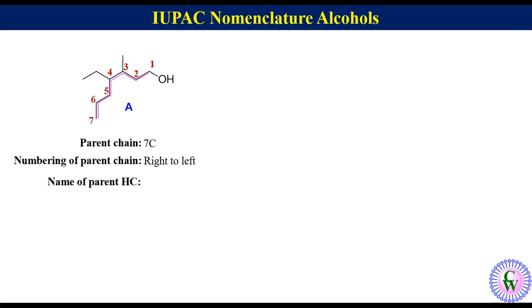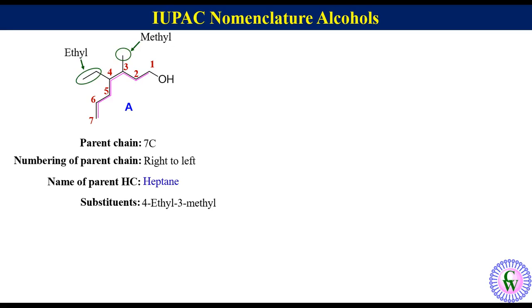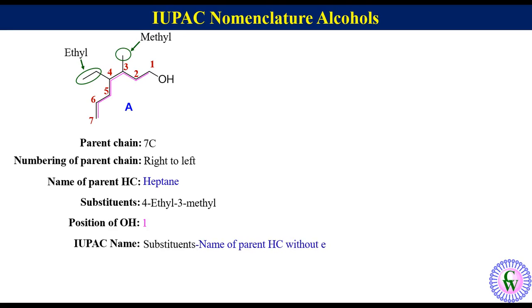Name of parent hydrocarbon: since the parent carbon chain has seven saturated carbon atoms, it will be named as heptane. Substituents: there are two substituents — an ethyl at C4 and a methyl at C3 — so they will be written as 4-ethyl-3-methyl in alphabetical order. Position of OH is 1. Putting all this information in the given order gives the IUPAC name of this molecule as 4-ethyl-3-methylheptan-1-ol.